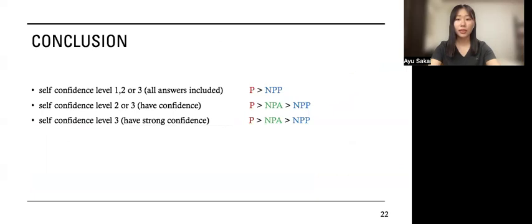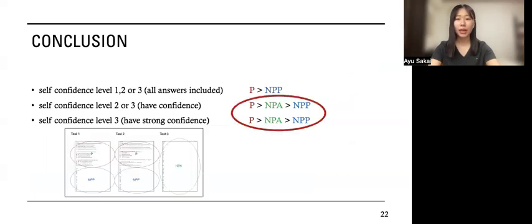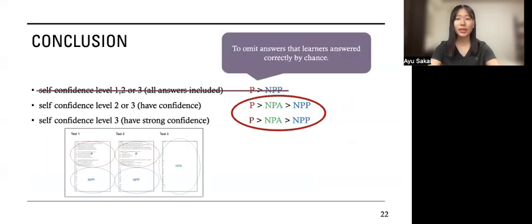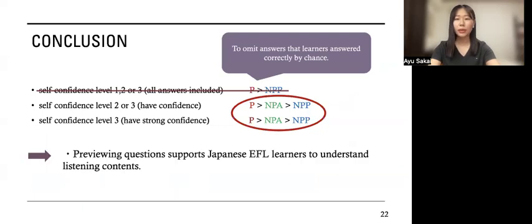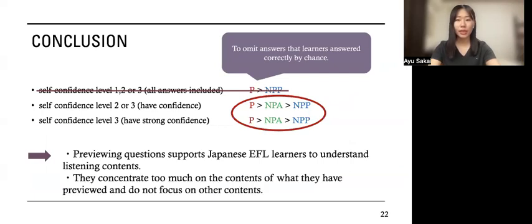In conclusion, P format achieved the highest score followed by NPA, and NPP scored the lowest, as I hypothesized when omitting answers which learners answered correctly by chance. So previewing questions supports participants to understand listening contents. And I also found that when they can preview some questions and some they can't, Japanese EFL learners concentrate too much on the contents of what they have previewed and they do not focus on other contents.